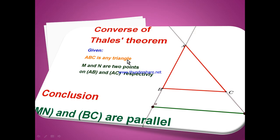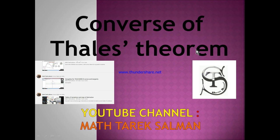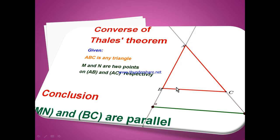Converse of Thales' theorem. Given ABC is any triangle, M and N are two points on the line AB and AC respectively. If the segments are proportional, so if AM over AB equals AN over AC equals MN over BC, then the conclusion is that MN and BC are parallel lines.